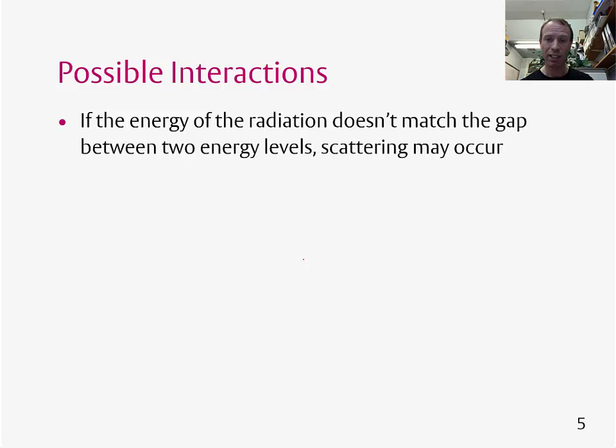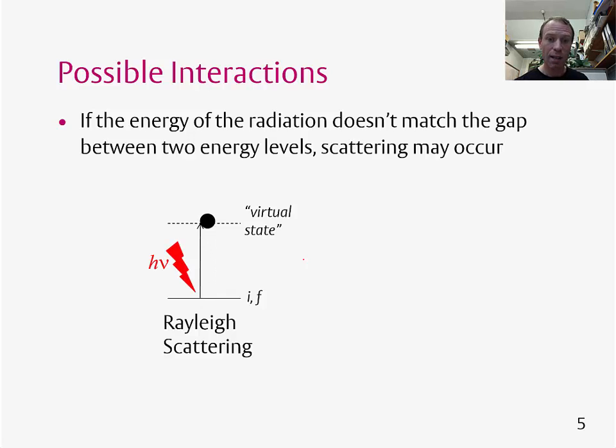There are two types of scattering that we're going to be interested in. There's so-called Rayleigh scattering, where the molecule absorbs light, is excited up to a virtual state, but falls back down immediately to the final state, which is the same as the initial state, and gives off light of the same energy that was originally absorbed.